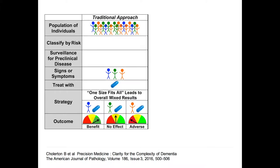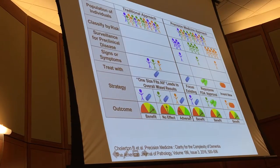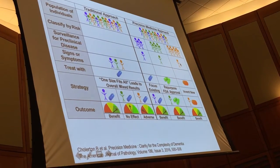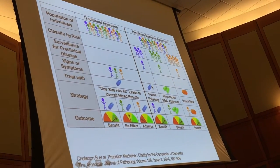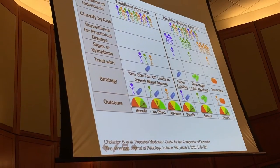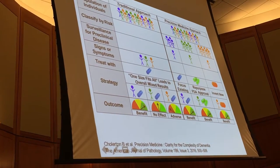The traditional approach with drugs is to have a population of individuals that share the same signs and symptoms, then treat them with the same drug — one size fits all. You will have three types of outcomes: a benefit, hopefully, but also no effect, or even worse, adverse effects. The precision medicine approach is to classify by risk, find subgroups of patients, and find the right drug for the right subgroup of patients so that you have a benefit in all cases — whether repurposing FDA-approved drugs or inventing new drugs.